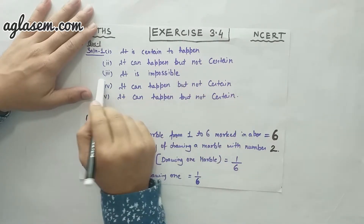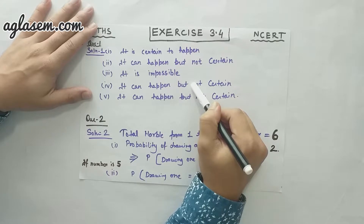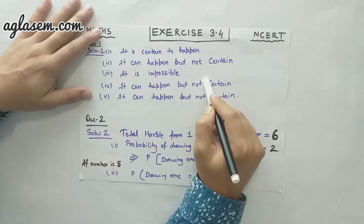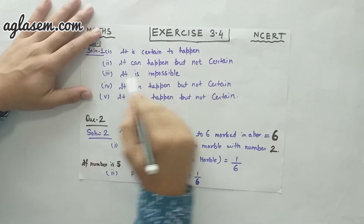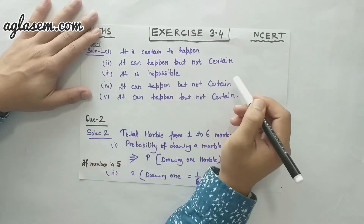Moving to the third part, the question is: a die when tossed shall land up with eight on top. It is impossible, because a die has six numbers only.